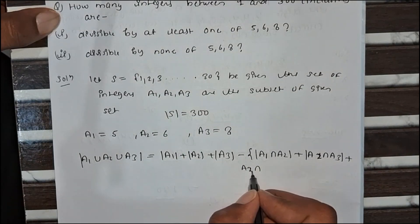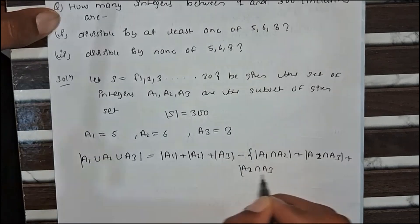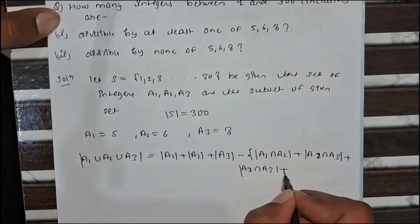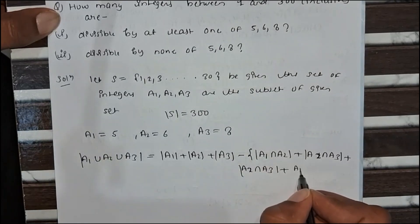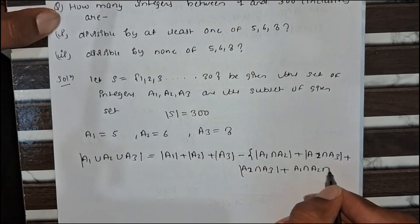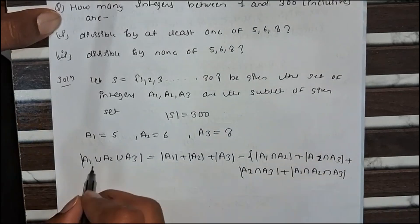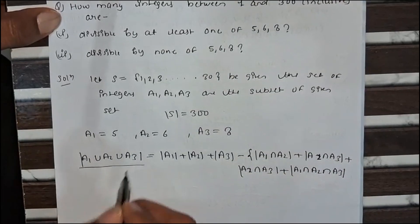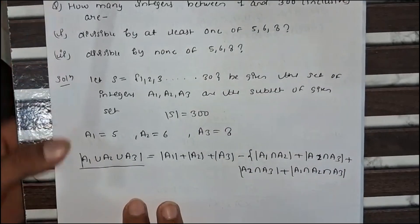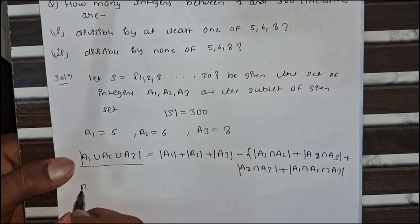The inclusion-exclusion formula for at least one gives us: |A1 ∪ A2 ∪ A3| = |A1| + |A2| + |A3| - |A1 ∩ A2| - |A2 ∩ A3| - |A1 ∩ A3| + |A1 ∩ A2 ∩ A3|. This is the formula for at least one.